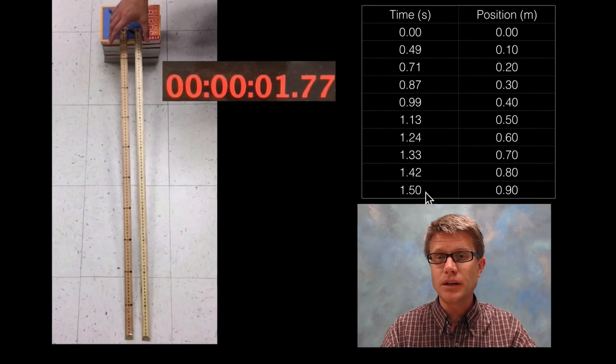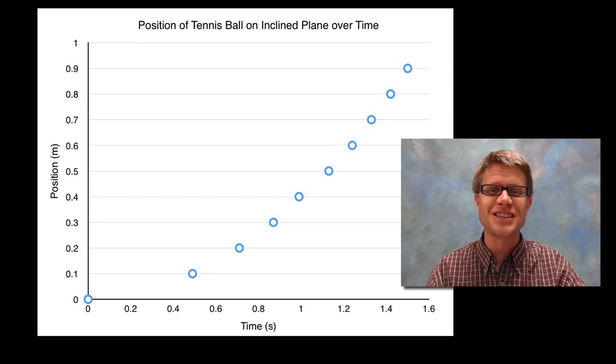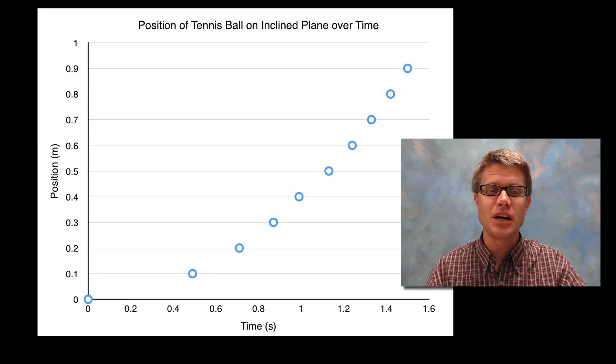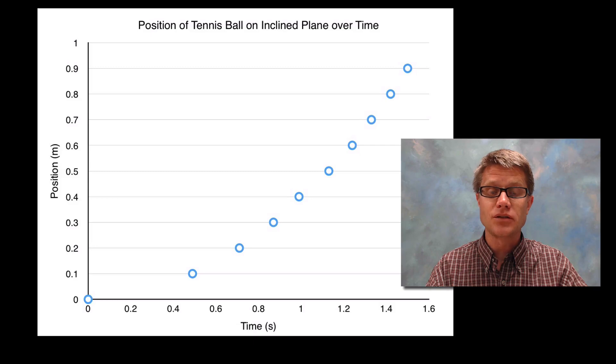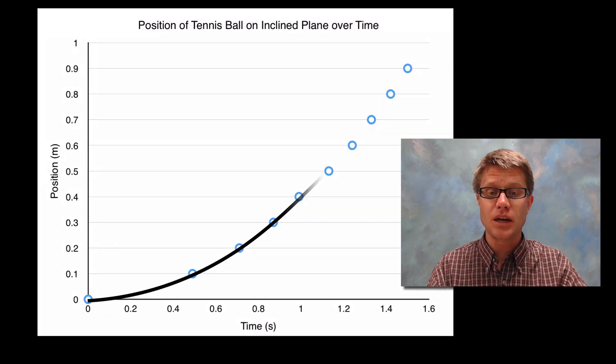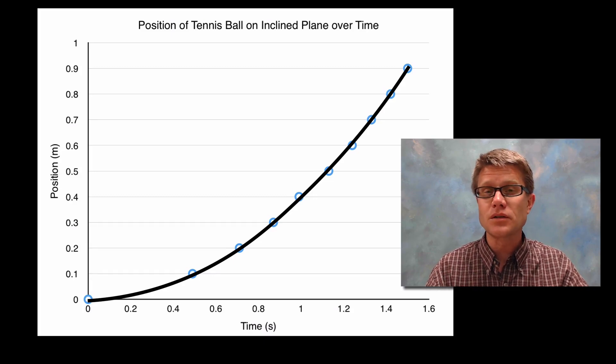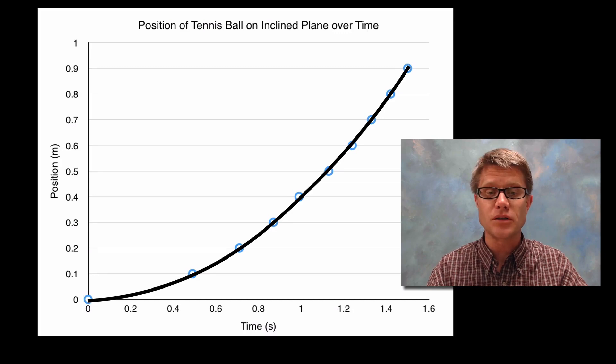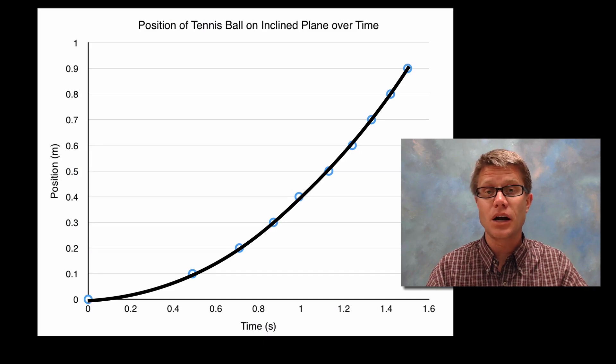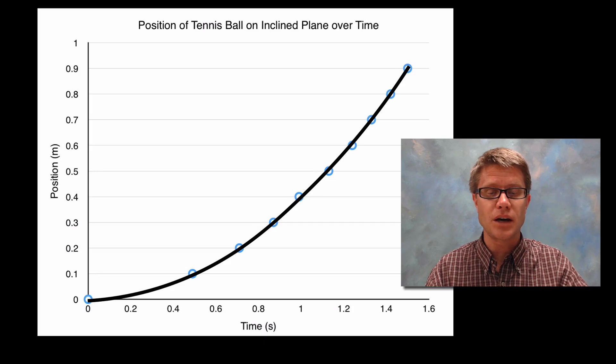A great way to look at this graphically is to graph it. I put time along the bottom and position over time. We can even make a best fit curve that fits with the data. What you can tell right away is that it's moving in the positive direction - position is getting greater over time. Also, its velocity is increasing; it seems like it's speeding up over time.